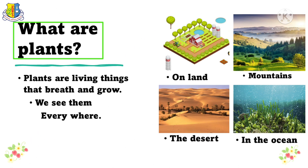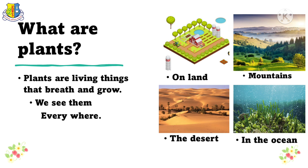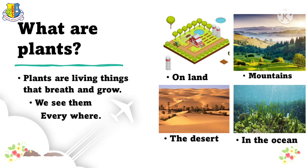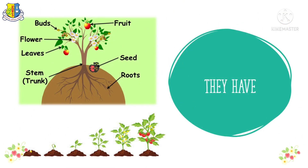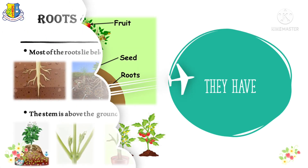What are plants? Plants are living things that breathe and grow. We see them everywhere — on land, the mountains, the desert, in the ocean. They have roots, stem, leaves, buds, flower, fruit, and seed.